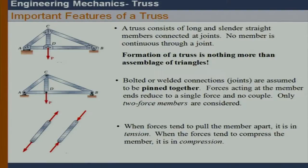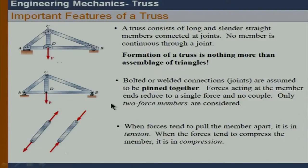The basis for that assumption is that, firstly, these members are long and slender in nature. Also, the loads applied in a truss must pass through the joint. Therefore, at the joint we are going to get a concurrent system of forces. Each and every member, since they are connected by pins at the two ends, we are going to call it a two-force member.